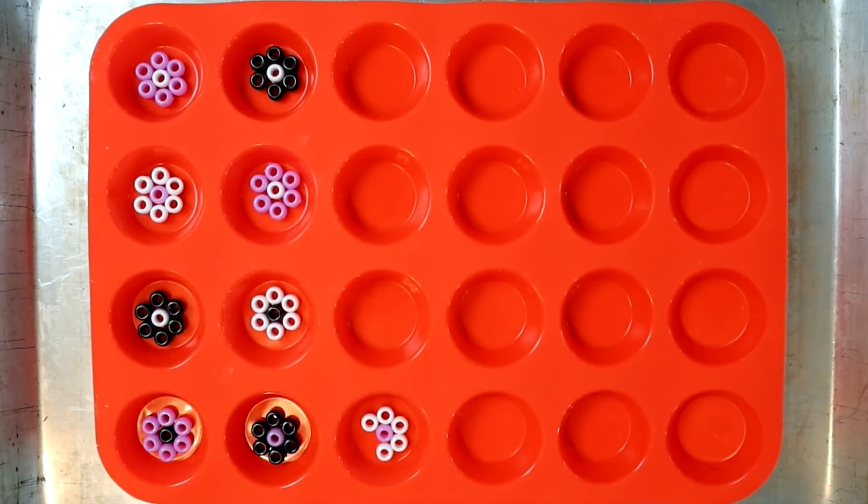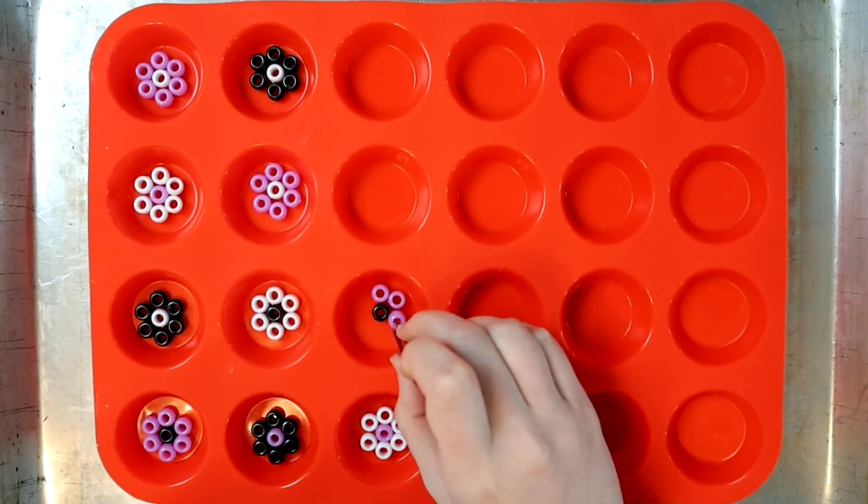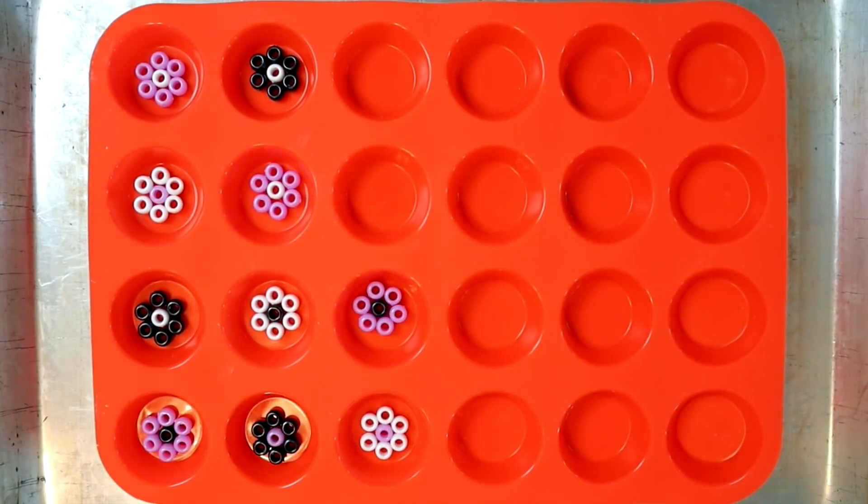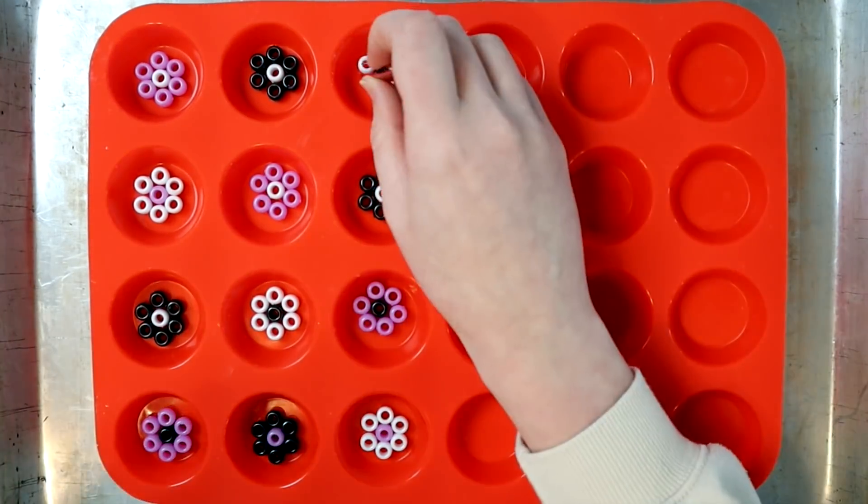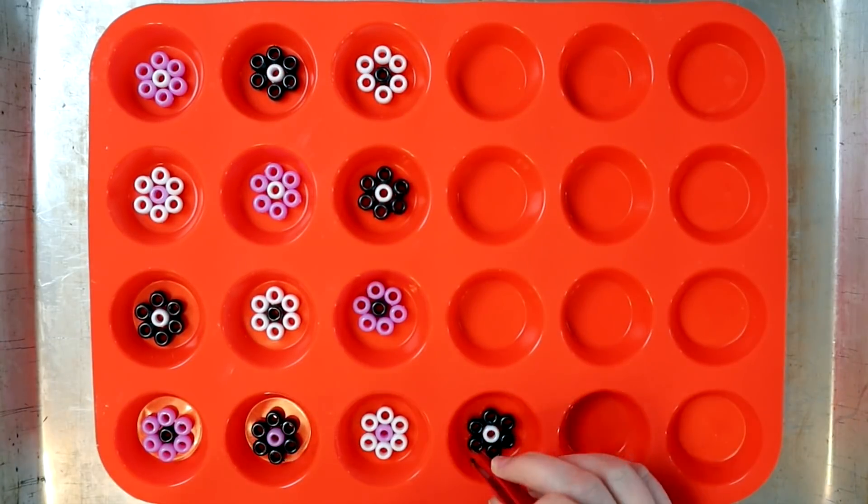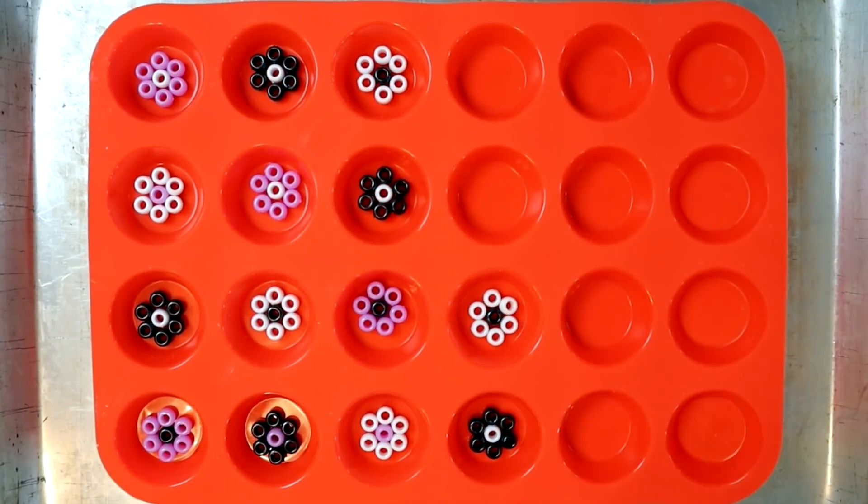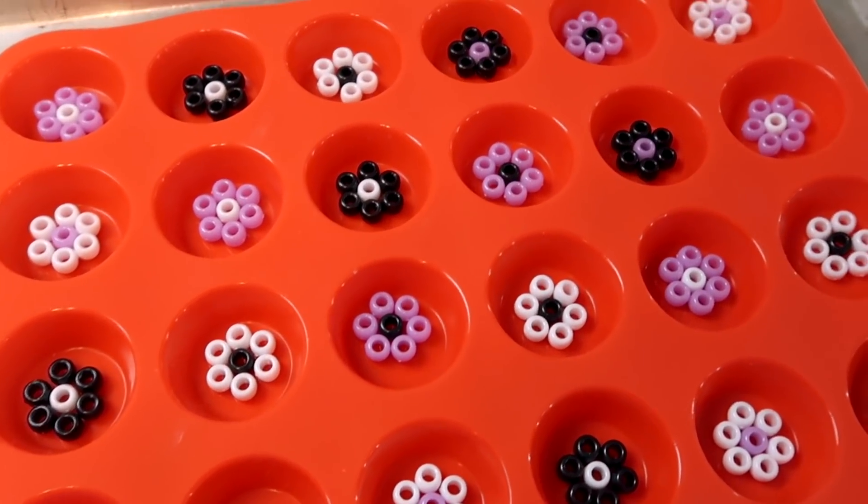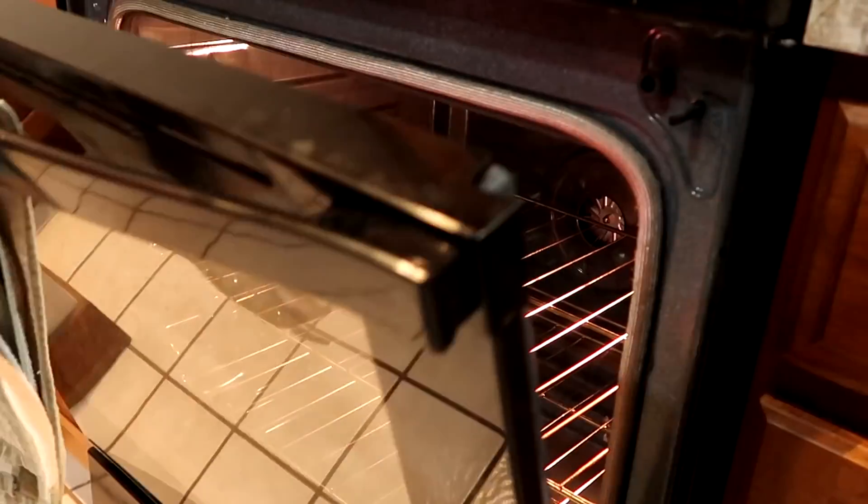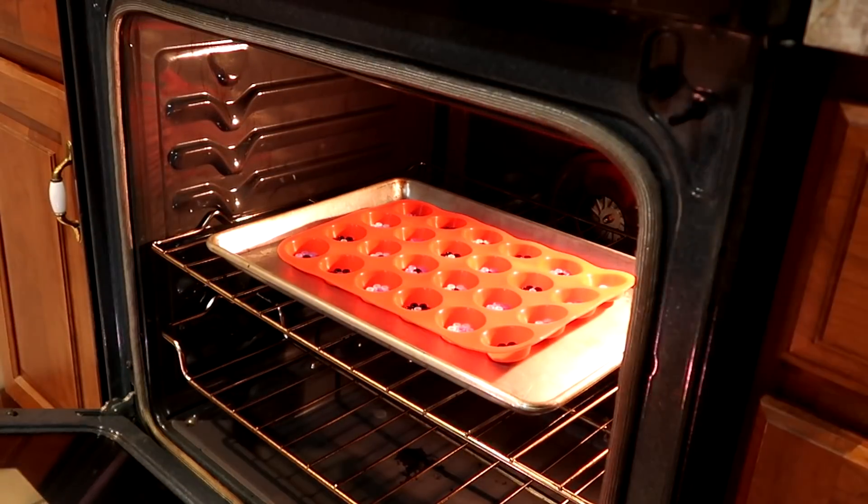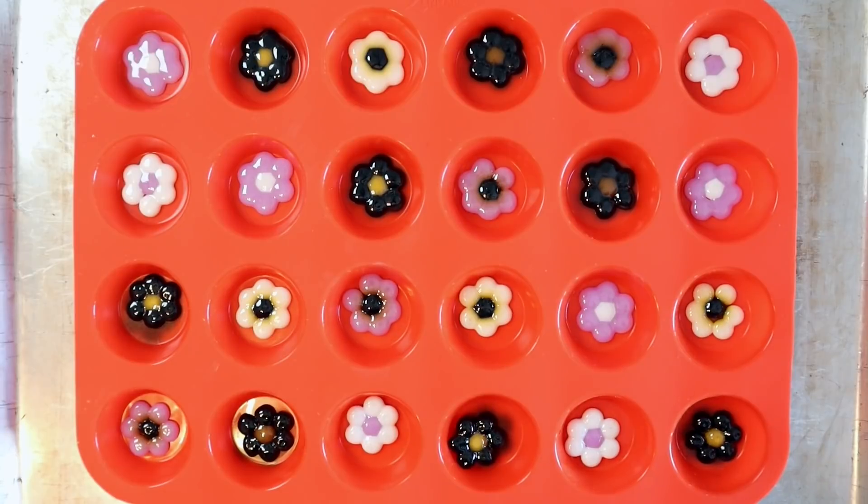These were actually really easy. All I did was I arranged the pony beads into flower shapes like this. Try to make sure that the beads are all touching each other. If there's a little bit of space, it's not a big deal though. I use tweezers to make it a little bit easier to arrange the beads, but you don't really need them. But once I had all my flowers, I put them in the oven at 375 degrees for about 20 minutes.